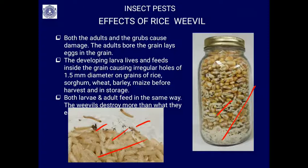The damage occurs both before harvest in the field and in storage. Both larvae and adults feed in the same way using chewing mouthparts to bore through grains. Importantly, the weevils destroy more than what they actually eat, resulting in significant wastage beyond just their consumption.